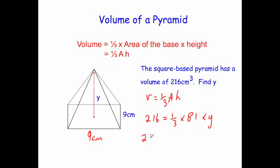Let's work that out. We've got 216 = 1/3 of 81, which is 27, times y. So 216 = 27y.